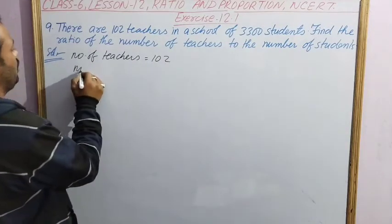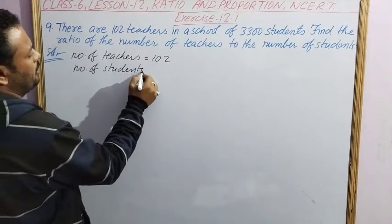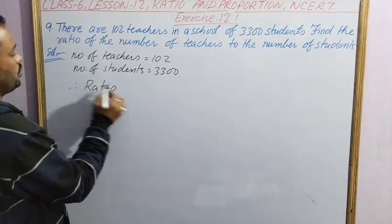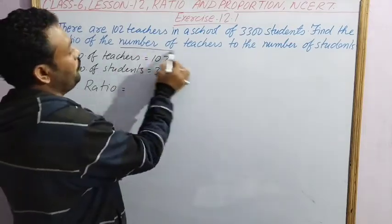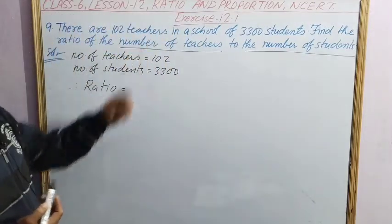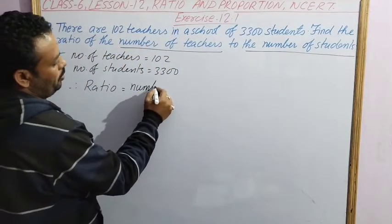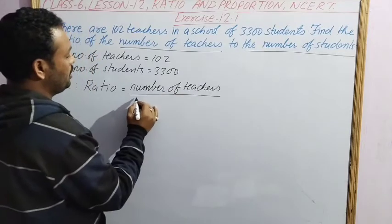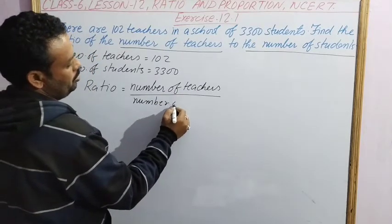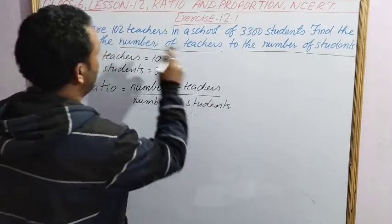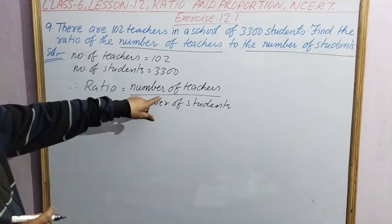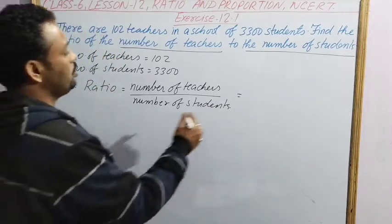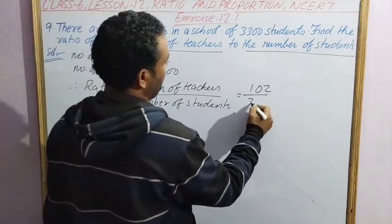Number of students is 3300. Now you have to find the ratio — therefore, ratio between number of teachers to number of students. So in the numerator we will take number of teachers and in the denominator we will take number of students. The first one which is said we take in numerator and second one in denominator. This is the main fundamental of the ratio.